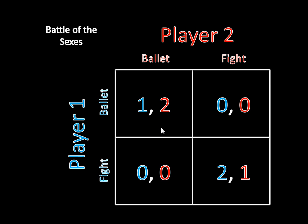For the Ballet-Ballet Equilibrium, player one gets one point and player two gets two points. For the Fight-Fight Equilibrium, player one gets two points and player two gets one point. We don't know just by looking at the matrix what the payoff is for the mixed strategy Nash Equilibrium, so we want to learn how to calculate that.